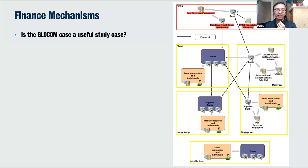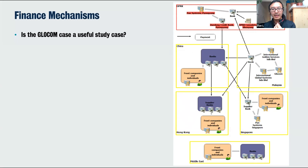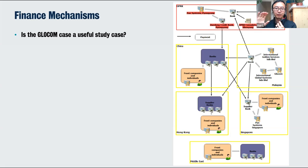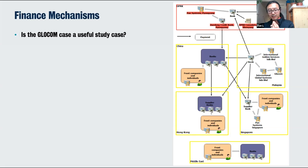This is to say nothing about the type of financing mechanisms that these networks are using. For example, GLOCOM is another network affiliated with COMID, and what we put out in 2017 about that particular network's financial proliferation finance mechanisms shows multiple jurisdictions and multiple layers of shell companies to hide the fact that a transaction is going from one jurisdiction and ultimately to the DPRK.